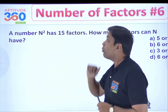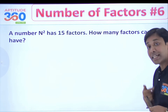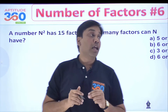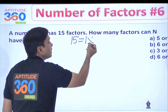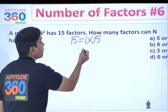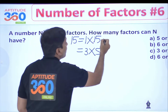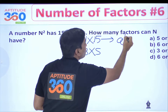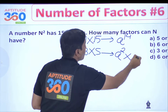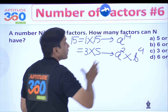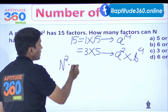Now we move to the next problem: a number N² has 15 factors. How many factors can N have? If N² has 15 factors, we need to think about how to write 15. It can be written as 1 × 15, or as 3 × 5. So in prime factorization terms, N² is either a prime to the power 14, or it is a² × b⁴ where a and b are distinct primes.